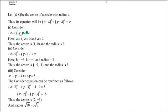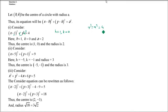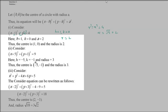For the first part: (x - 1)² + y² = 4. We can write y² as (y - 0)², and 4 = 2². So h = 1, k = 0, and radius = 2. Center is (1, 0) and radius is 2.